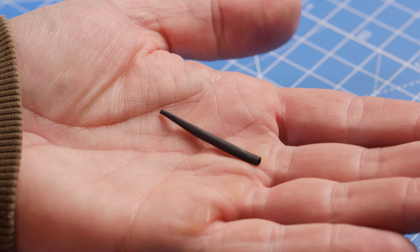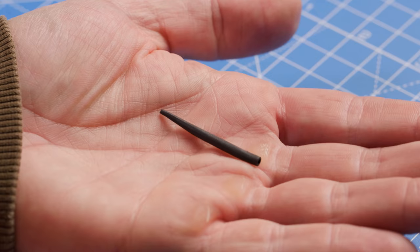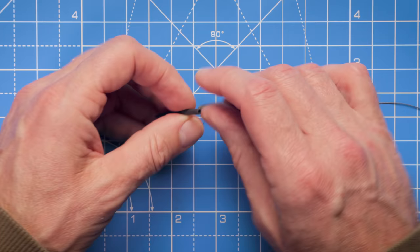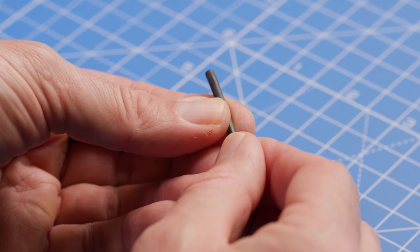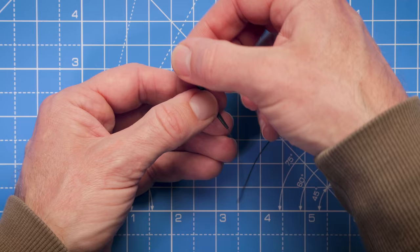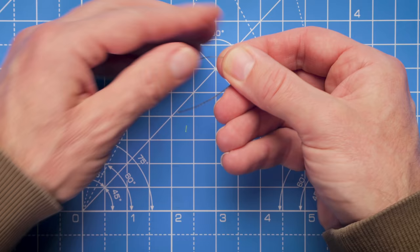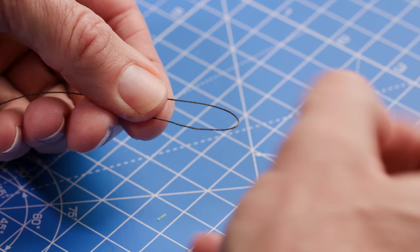Now we can think about tidying up the other end of the rig. I've taken an anti-tangle sleeve, a very important component when it comes to tying rigs, especially when you're using a soft uncoated braid as we are today. Just going to thread that through the anti-tangle sleeve.